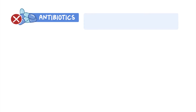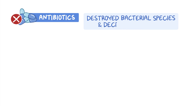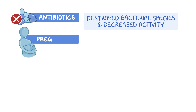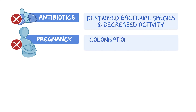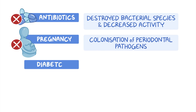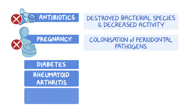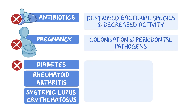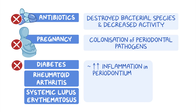The use of antibiotics can produce changes in the oral microbiota by destroying many bacterial species and decreasing their enzymatic activity. In pregnancy, the oral microbiota goes through important changes which lead to colonization of various microorganisms, especially periodontal pathogens that may be a risk for the health of the pregnant woman. Some systemic diseases such as diabetes, rheumatoid arthritis, and systemic lupus erythematosus can enhance inflammation in the periodontium, which can lead to a shift in bacterial composition and increase the risk or severity of periodontitis.